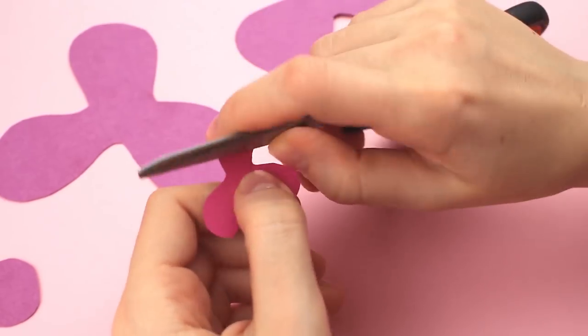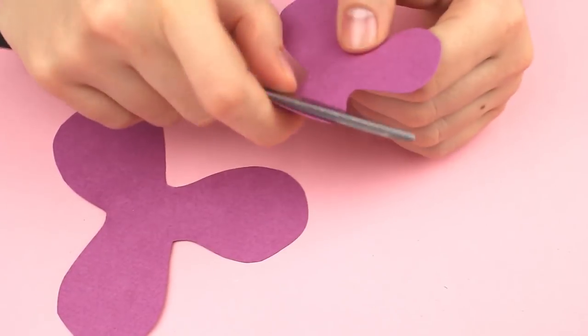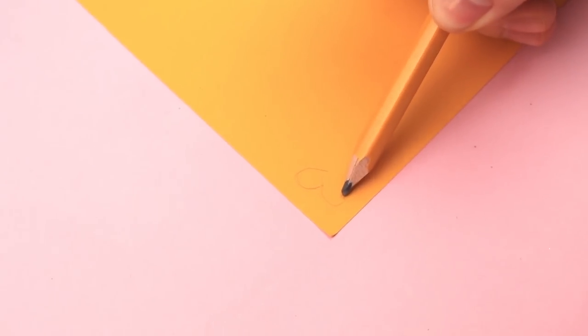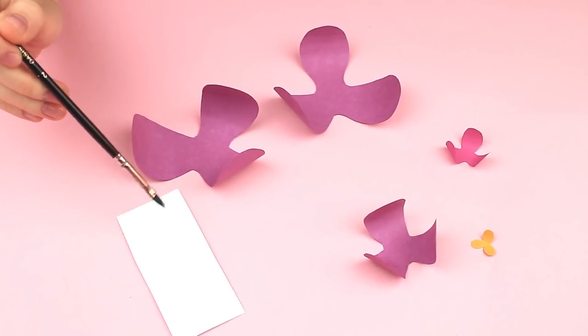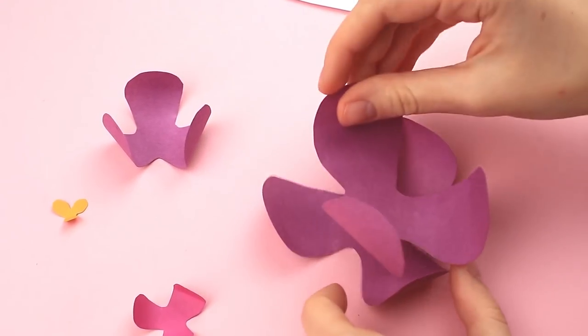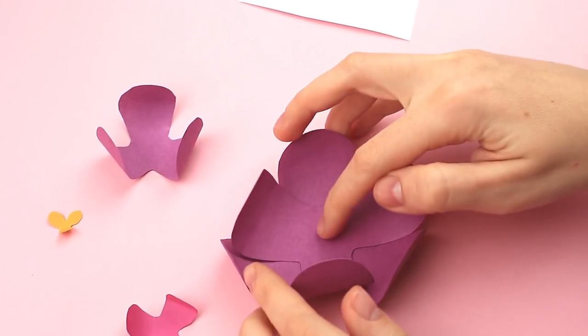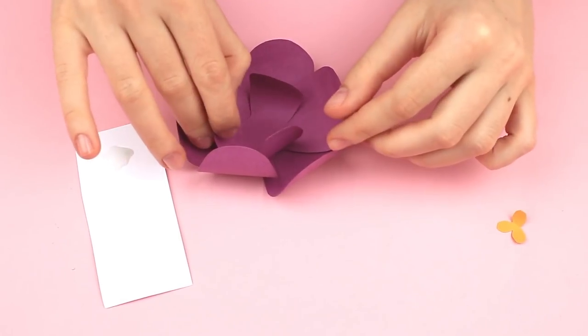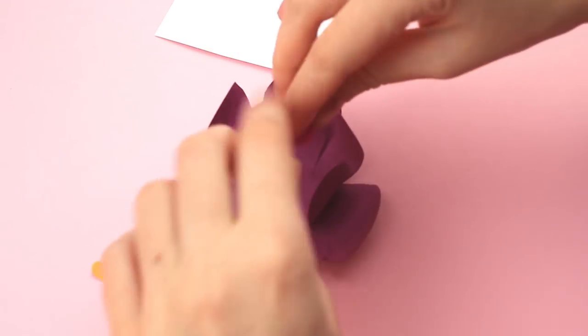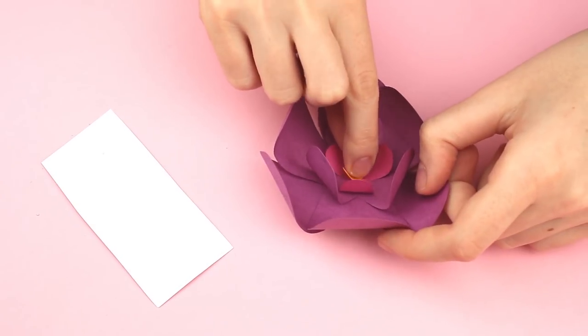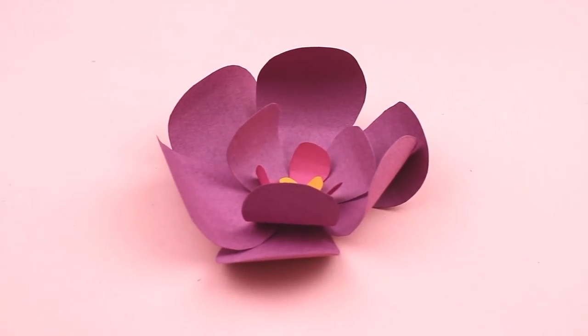Fold a petal to make it volumetric. Add the last yellow element. Now, assemble a flower. Add some glue with a brush to the center of the biggest detail. Attach the next element to overlap the gaps between the lower petals. Continue sticking the petal details in the same way. Be careful to reduce the size. The gorgeous 3D flower is ready to embellish the wrapping.